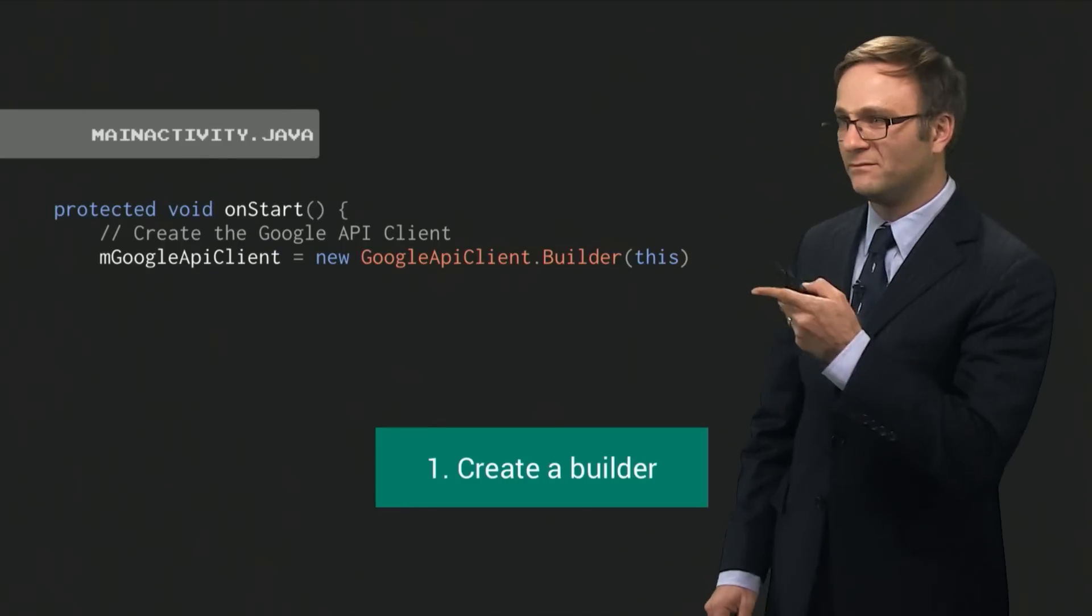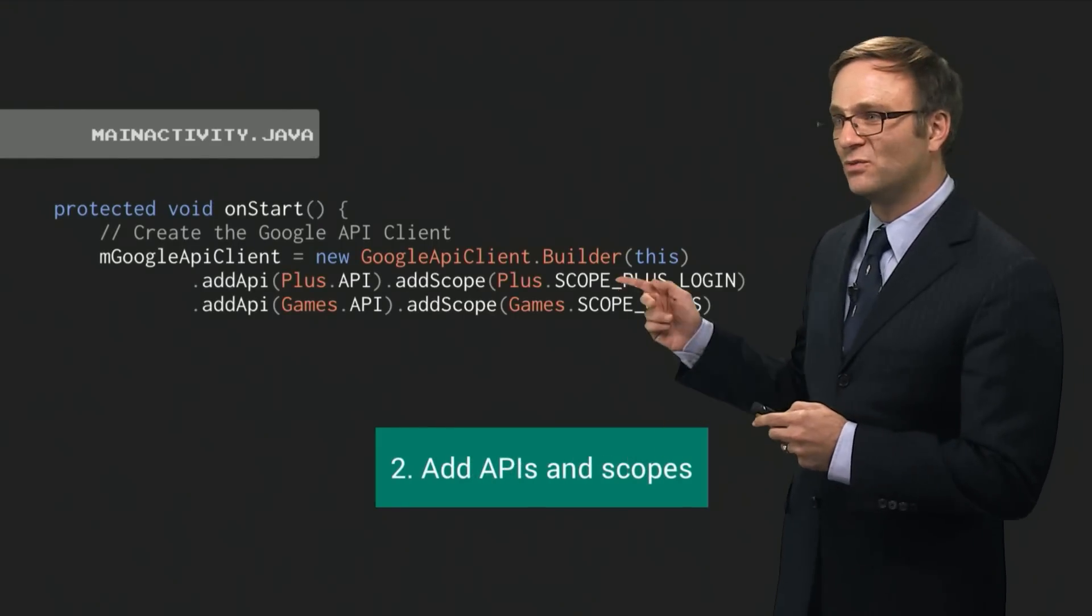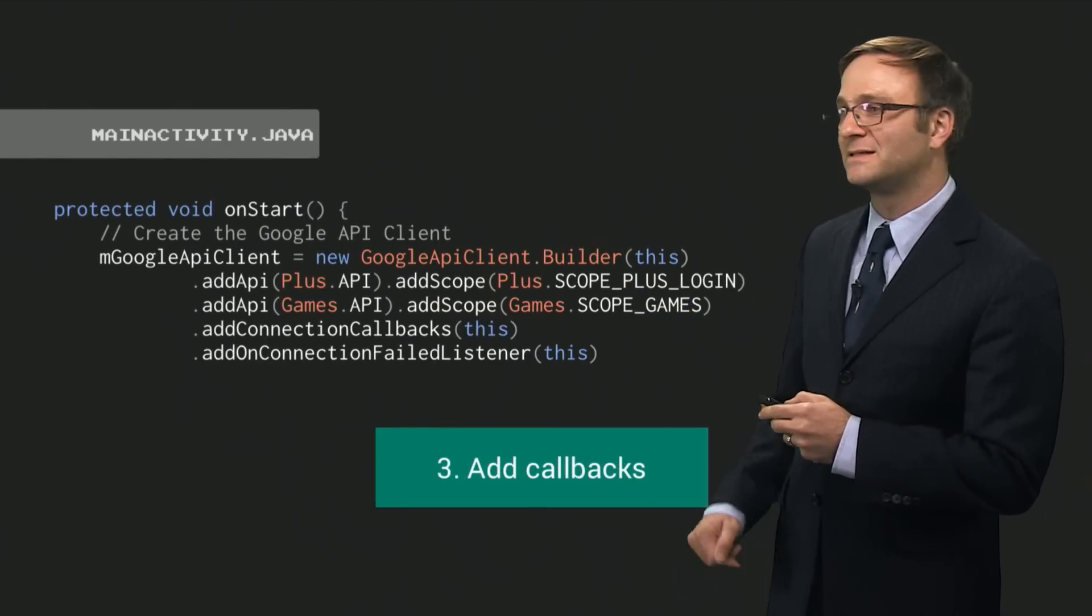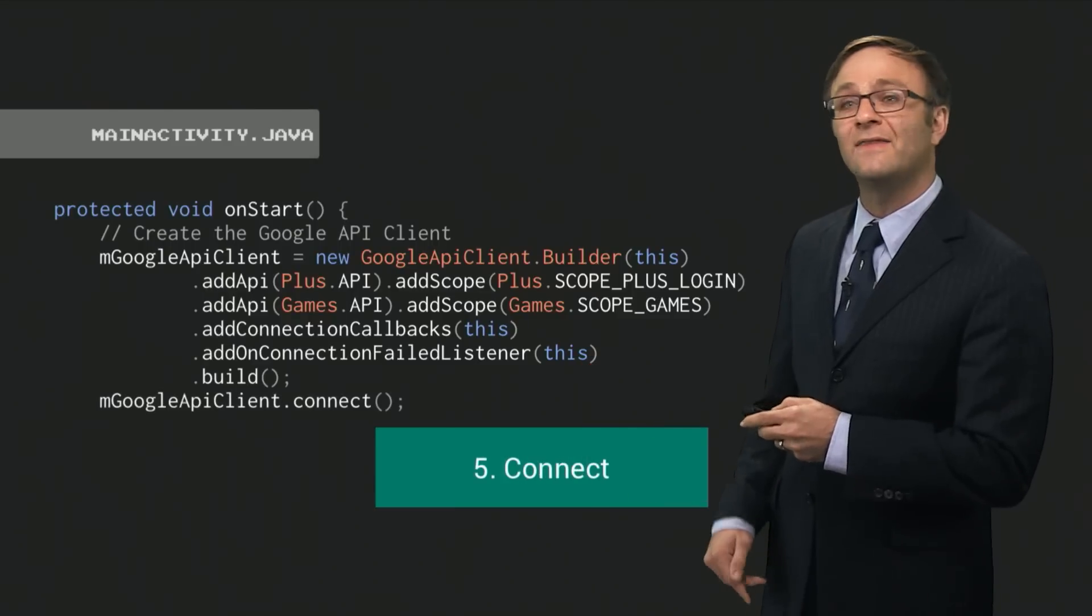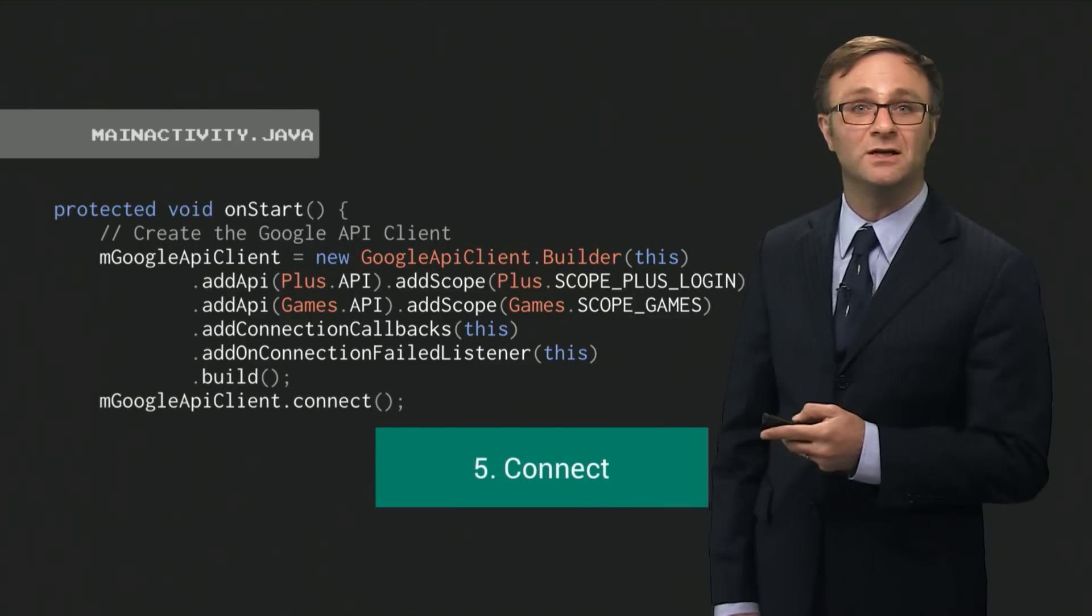Here's how it works. Step one, you're going to create a builder. Step two, add your APIs and your scopes. Step three, add some callback listeners. Don't forget to call build. And then call Connect on this new client, and you're pretty much done.